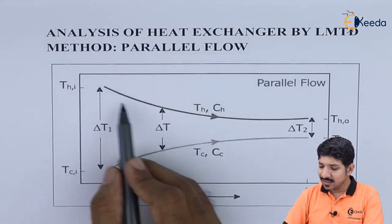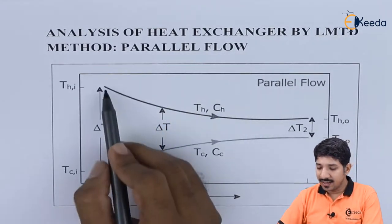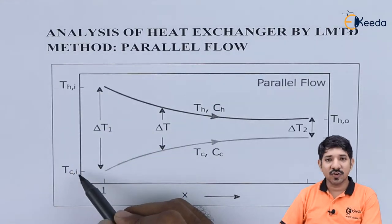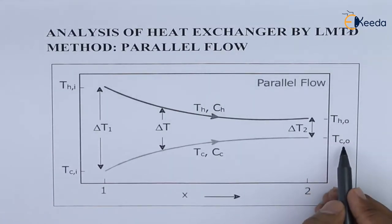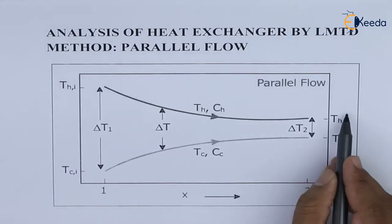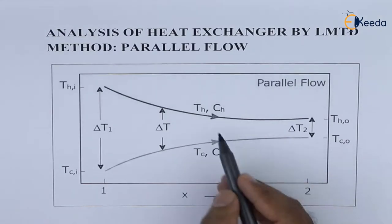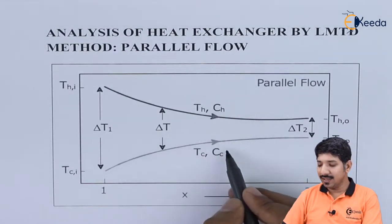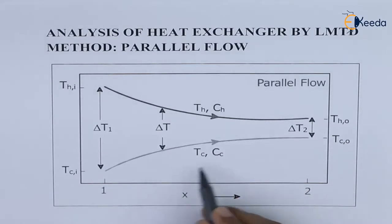For this, they have given a diagram where THI and TCI are the inlet temperatures of the hot and cold fluid, and THO and TCO are the exit temperatures of the hot and cold fluid. Similarly, CH and CC are the heat capacities. Now let us look at the same thing with the help of a schematic diagram.